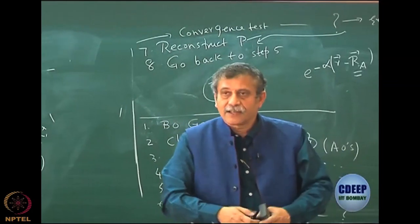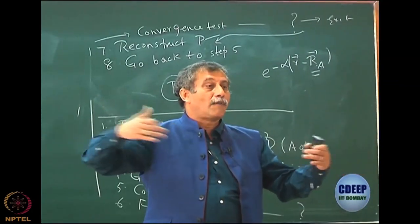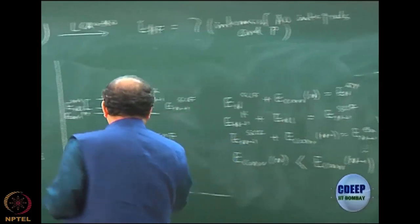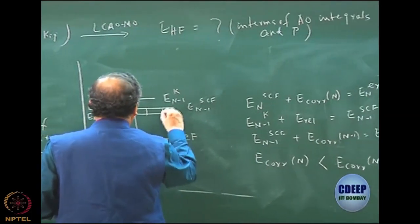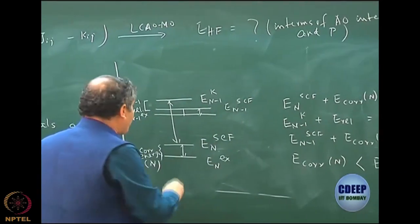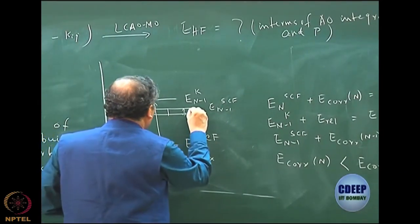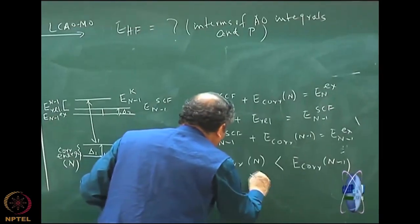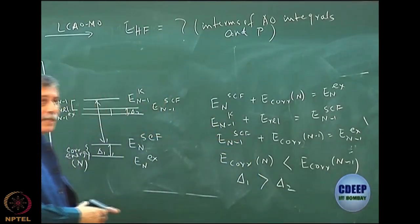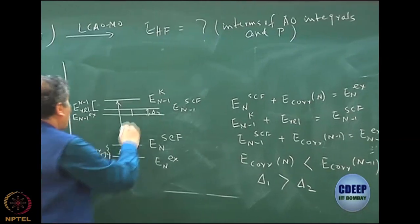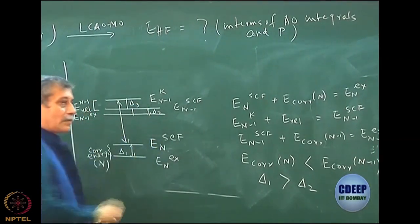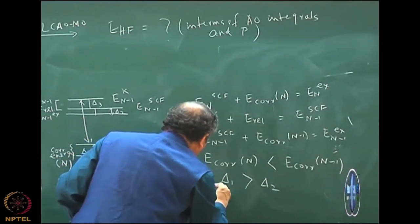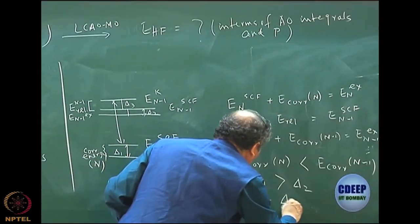So this gap — call it delta 1 — is much higher than this gap delta 2, as you can see graphically. Delta 1 is larger than delta 2. And there is an additional delta 3 here which is the relaxation. Delta 1 is greater than delta 2 to the extent that delta 1 can come pretty close to delta 2 plus delta 3.